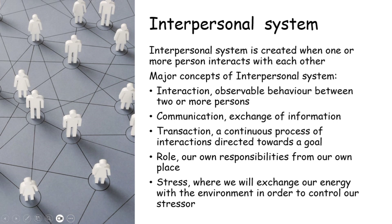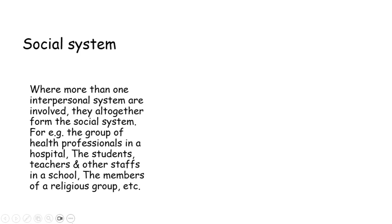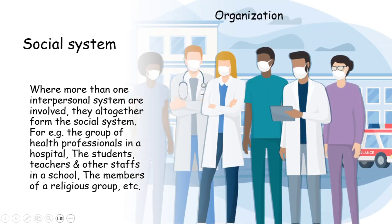Next is the social system. Where more than one interpersonal system is involved, they together form the social system. For example, the group of health professionals in a hospital forms a social system. Students, teachers, and other staff in a school form a social system. The members of a religious group form a social system. Our first concept is organization — a group of people with a particular purpose. For example, nursing professionals working in a hospital with the purpose of serving patients — that is our organization.